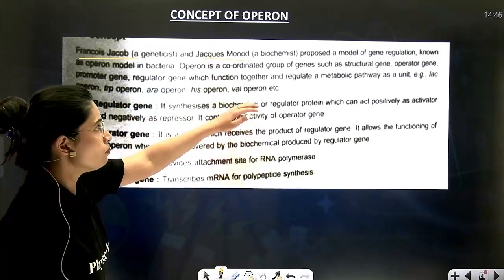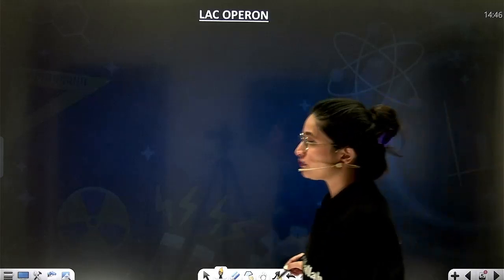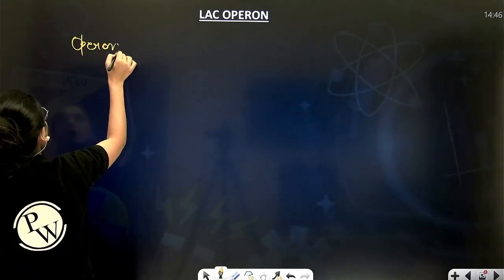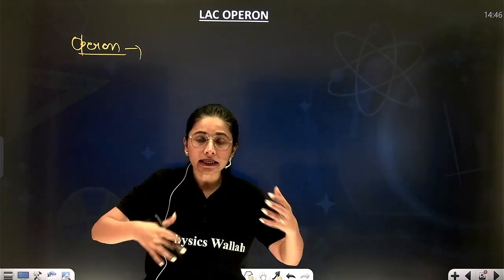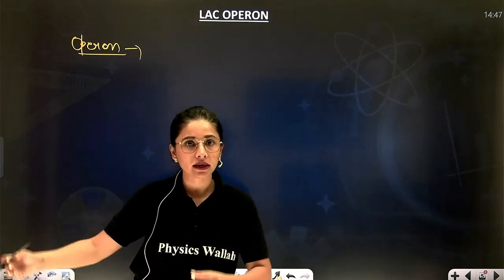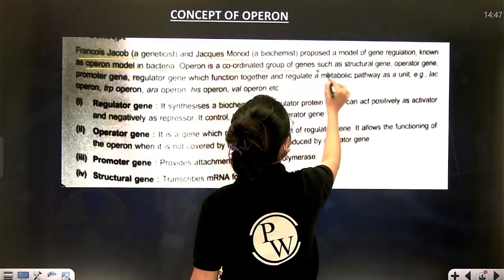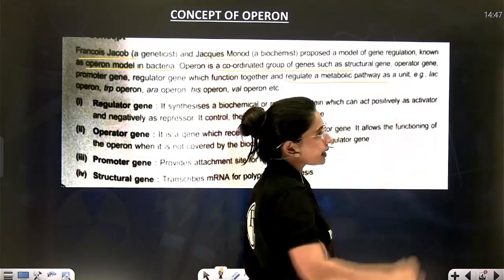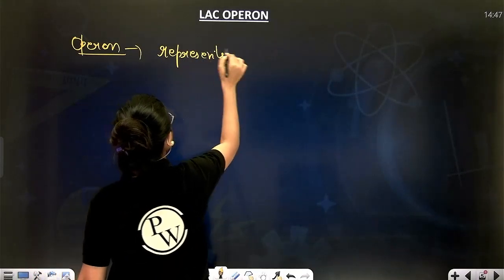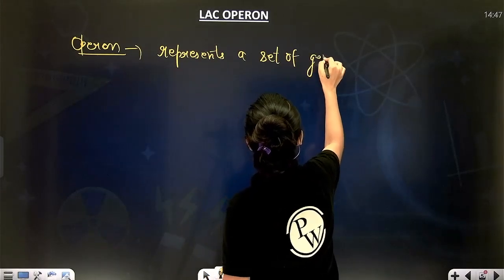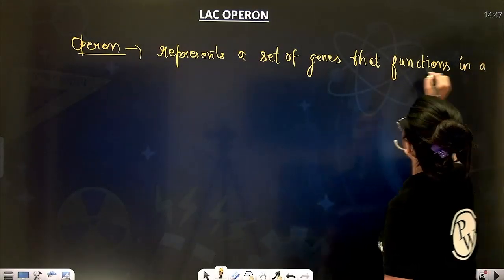Jacob and Monod proposed a model of gene regulation known as the operon model in bacteria. What do you mean by operon? Operon means a set of genes located on DNA which are working in a regulated manner — as and when required, those genes will work; as and when not required, those genes will not be made to work. So how will you define operon? Operon is a coordinated group of genes that functions in a regulated manner. Operon represents a set of genes that functions in a regulated manner.